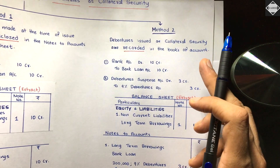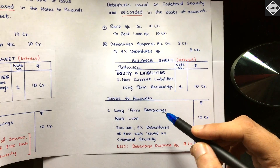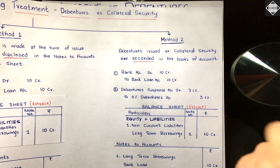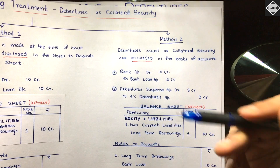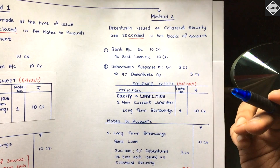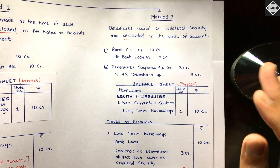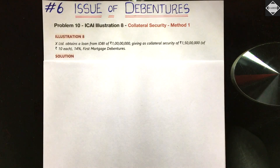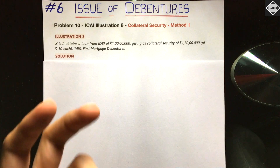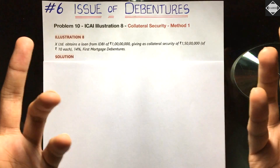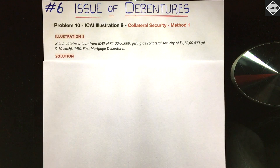In the CA Foundation syllabus, the same Method 2 is used but with a different presentation: the Debenture Suspense Account is shown under Other Non-Current Assets, and the debentures are shown as usual under Non-Current Liabilities (Long-Term Borrowings). Both things are shown separately. The ultimate effect is the same because one side has the liability and the other has the asset — they are contra entries.